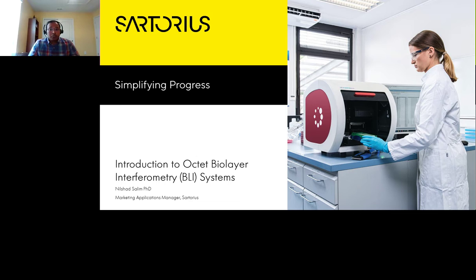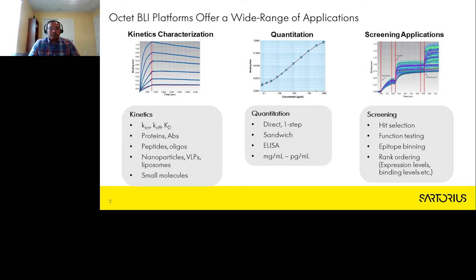Hello and welcome again to our webinar today. I will give you a short introduction to Octet BioLayer Interferometry platforms before I hand over to Professor Rouleau, who will talk about his research developing small molecule immunotherapeutics. Octet BLI platforms are commonly used in three main types of applications. Kinetic characterization involves the measurement of binding on-rates, off-rates, and affinities between a range of analytes — from small molecules, peptides, and antibodies to larger nanoparticles, liposomes, or even cells.